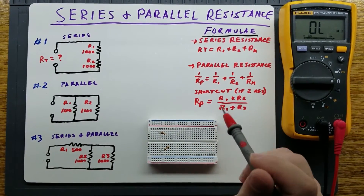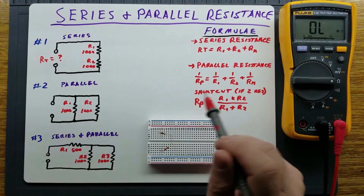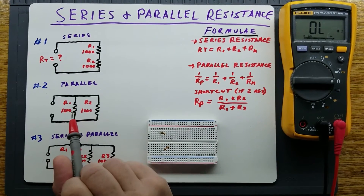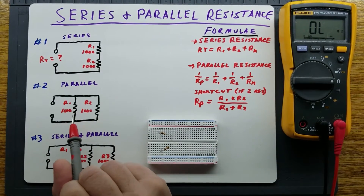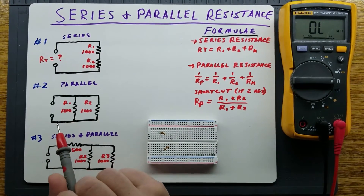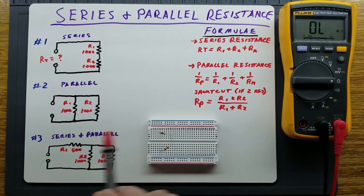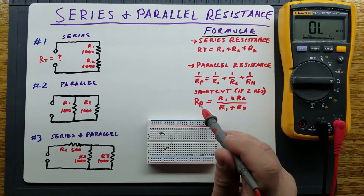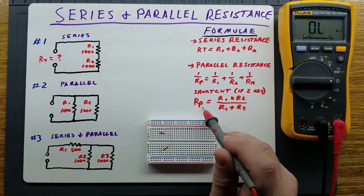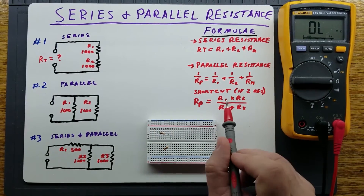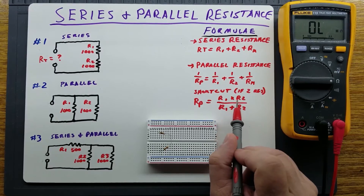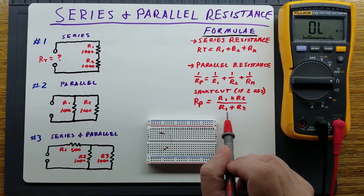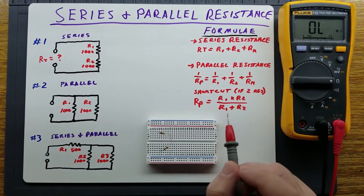There's a shortcut for parallel resistance, but only when you have two resistors in a circuit — it doesn't work for more than two. In that case, Rp is equal to R1 times R2 divided by R1 plus R2.